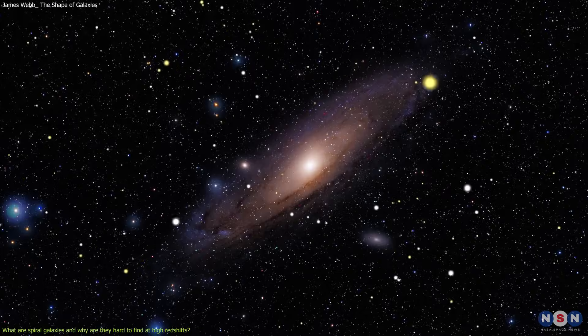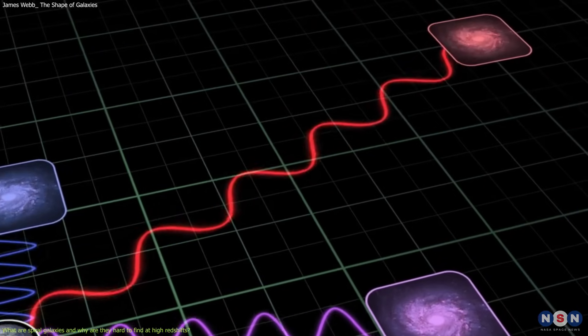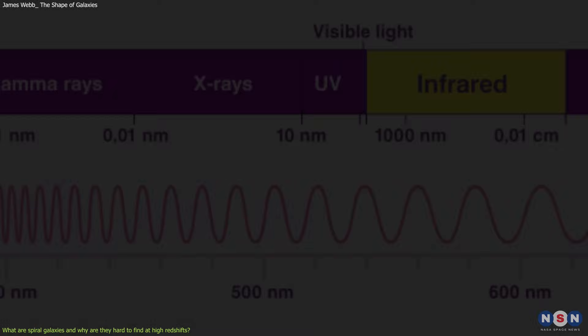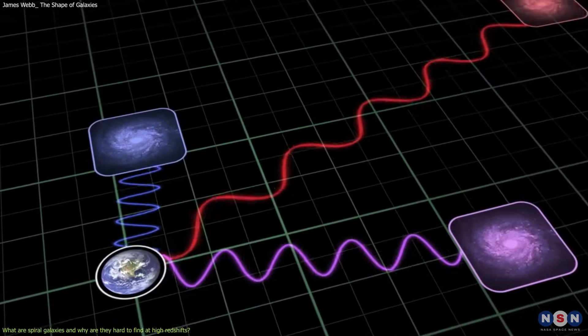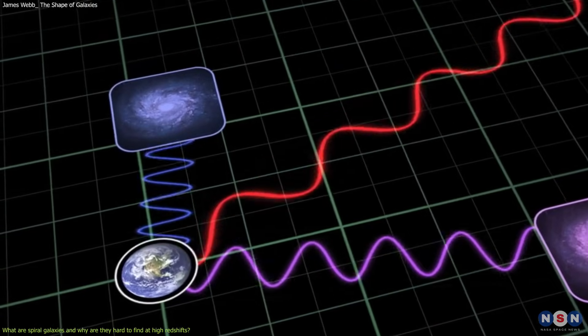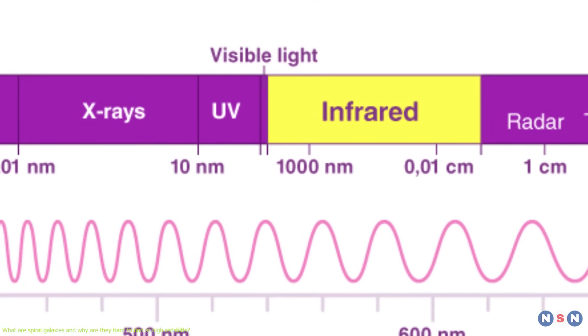The farther away a galaxy is, the more its light is stretched and shifted to longer wavelengths, such as infrared. The closer a galaxy is, the less its light is stretched and shifted to shorter wavelengths, such as visible or ultraviolet.